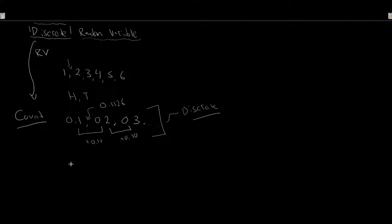The big thing with discrete random variables is that they are situations where we're stuck counting. Things that are discrete are going to be counted; things which are continuous are typically measured. So as we move further in the course with both continuous and discrete variables, this will be a good way for us to differentiate one from another.